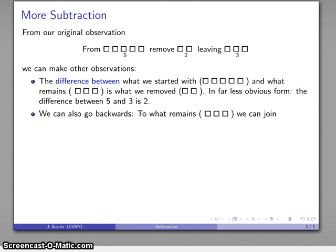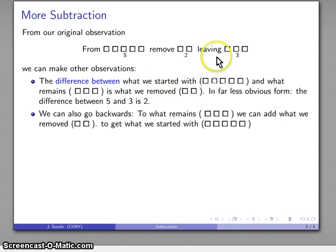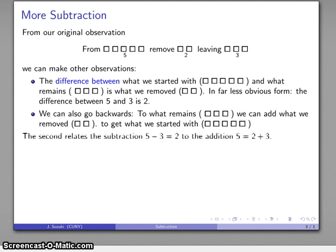We can also go backwards. The other possibility here is, to what remains we can add what we've removed, and that'll give us what we started with. To this we can join this, and that gets us this amount. And this second idea is how we actually define our subtraction: what we get after we do the subtraction plus what we took away gives us what we started with.